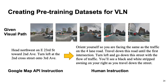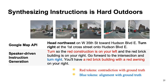Do we really need the Google Map API instruction? Can we just use a back-translation model or speaker model to synthesize the instruction from the given visual path? Yes, we need the Google Map API instruction — because synthesizing instructions is very hard from scratch. Here is an example: the instruction generated by the speaker model is in very poor quality, in that the directions and objects are not aligned well to the real visual path, and therefore misleading for the VLN agent.